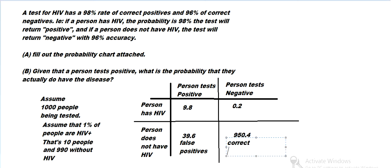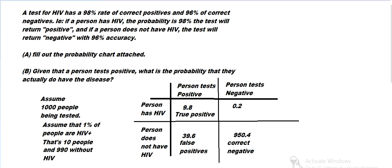This is the correct negative at 950.4, because they do not have HIV and they test negative. If they do have HIV and they test positive, that's a true positive, or correct positive. And then if they have HIV but they test negative, that's a false negative.